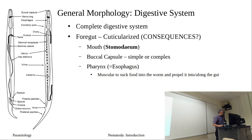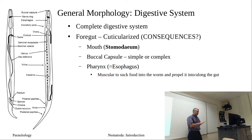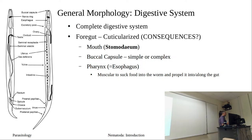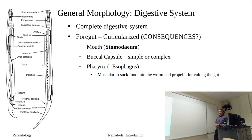We're on nematodes. We left off at the digestive system. With platyhelminths, they either had no gut and no mouth, or they had a gut with a mouth. For the nematodes, we actually have a complete digestive system — a mouth and an anus.